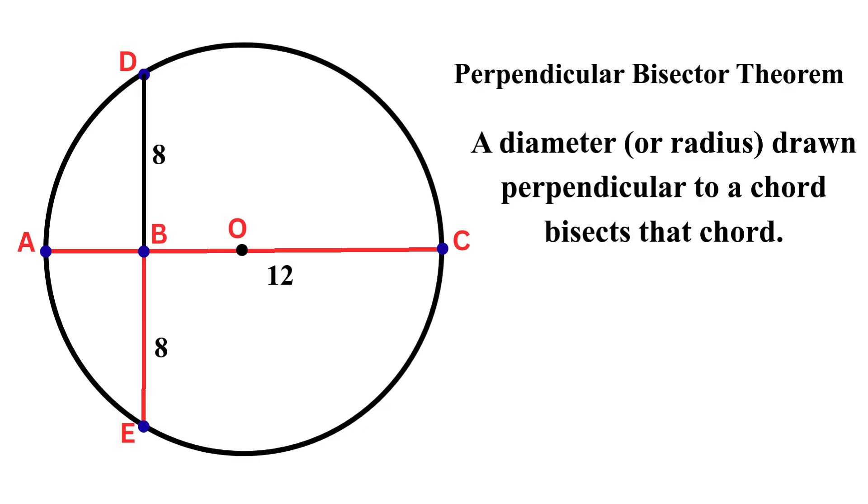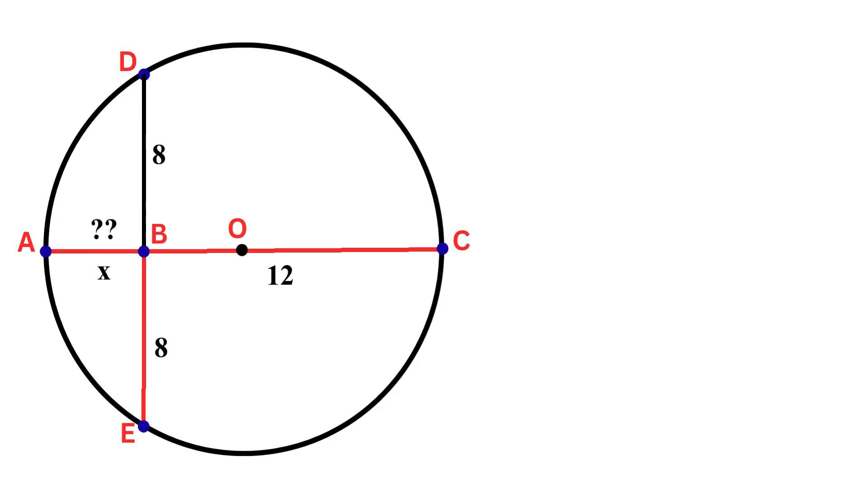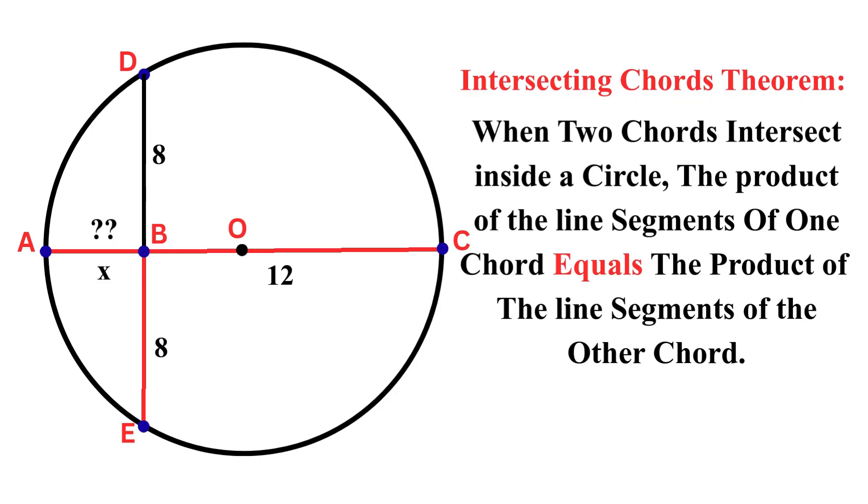But this line segment AB is unknown, so we assume this as X. Now we apply the intersecting chords theorem. The theorem states that when two chords intersect inside a circle, the product of the line segments of one chord equals the product of the line segments of the other chord.